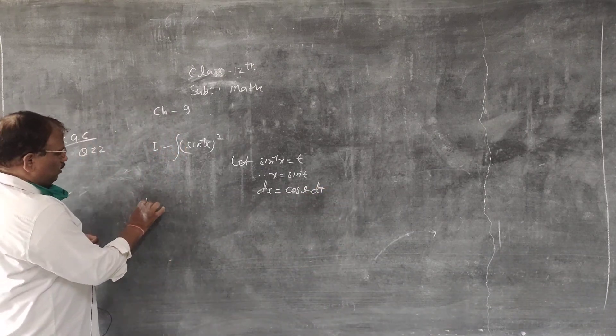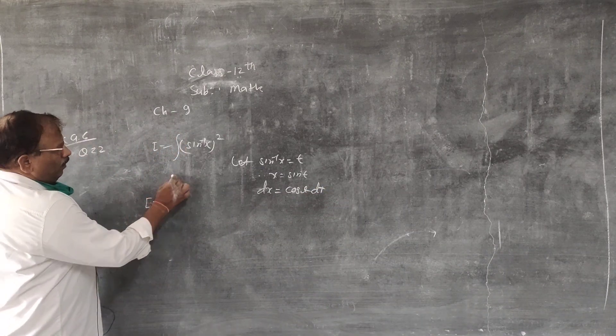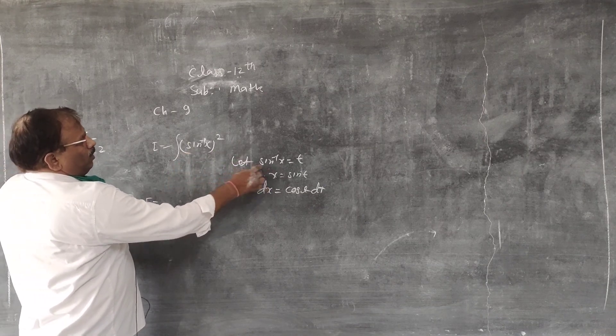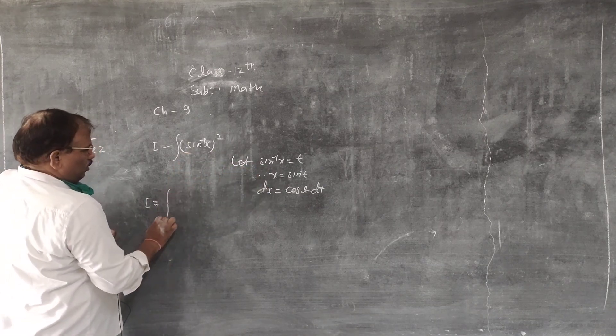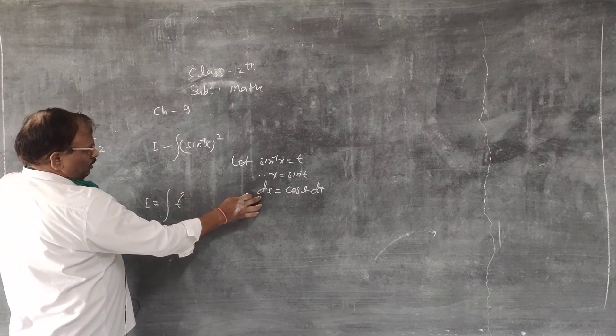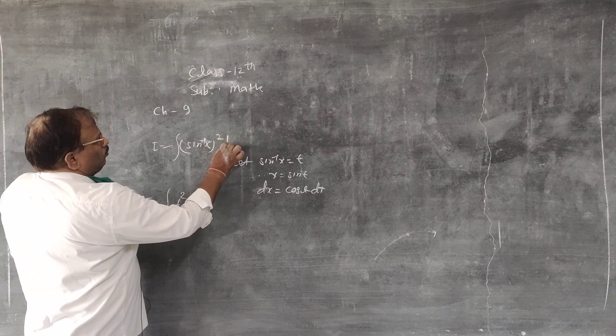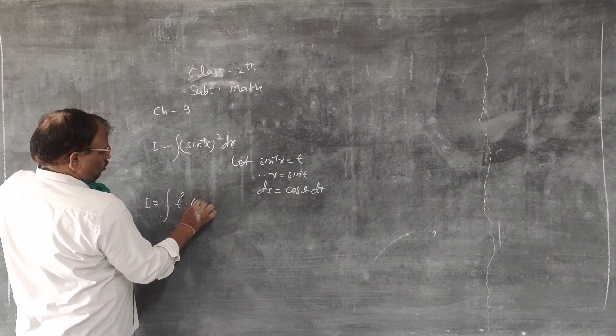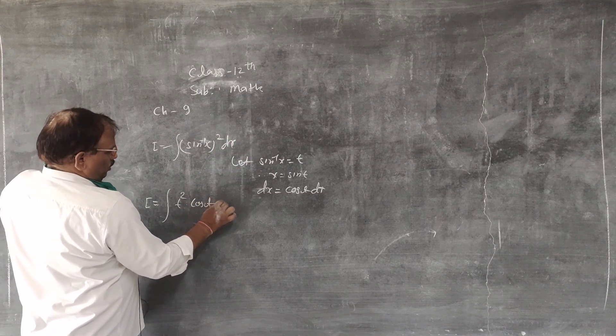Converting the integral: i = ∫(sin⁻¹x)² dx becomes ∫t² · cos t dt after substitution.